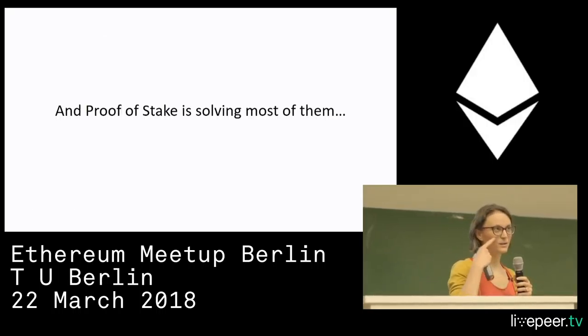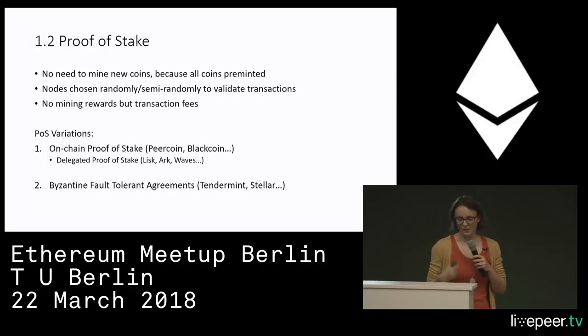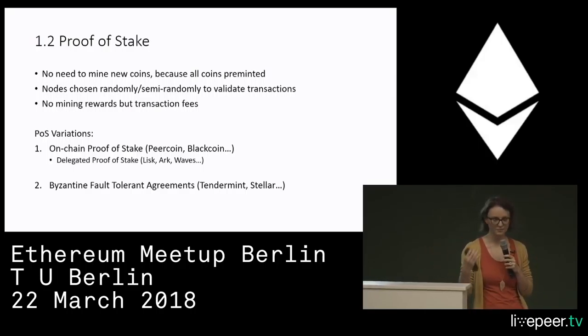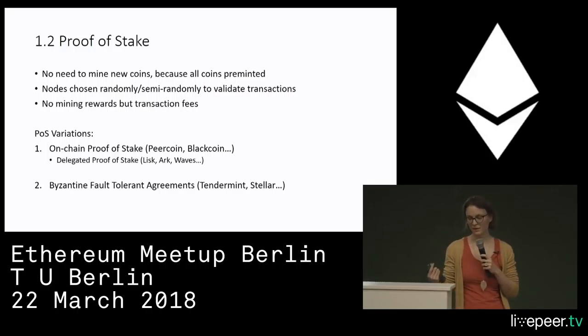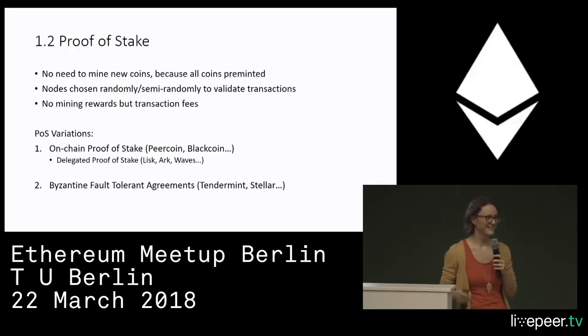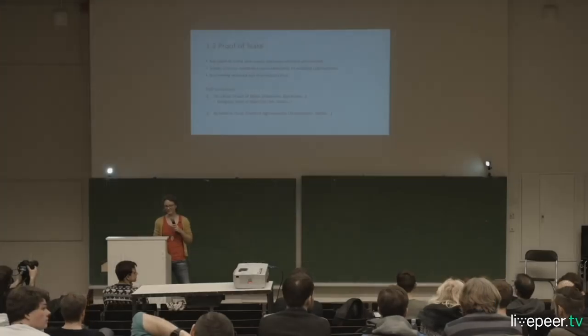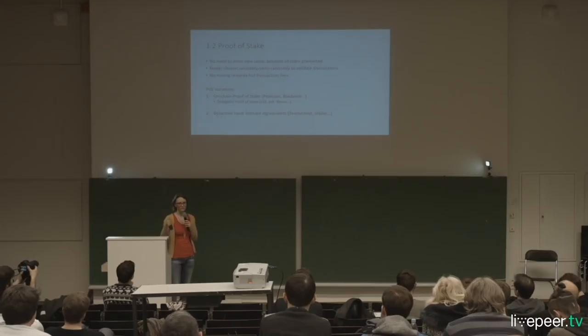There is this new thing called Proof of Stake, which is solving a lot of these problems — not all, but a lot. In Proof of Work, you need miners to perform mathematical work to create new coins. In POS, coins are usually already pre-minted. You don't have miners doing work to validate transactions — you have validators that are chosen, sometimes randomly, and these nodes validate transactions. There is no mining reward, but instead you have transaction fees.